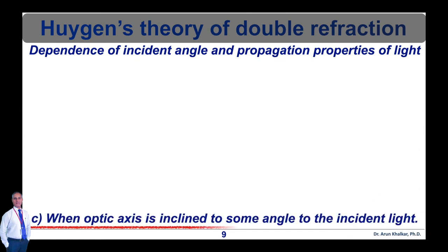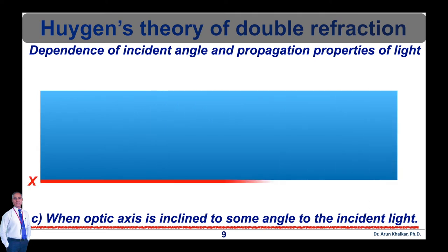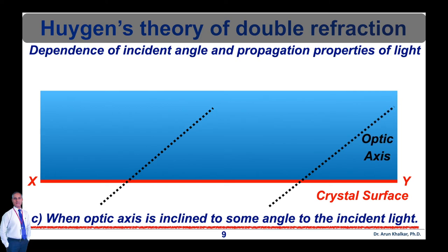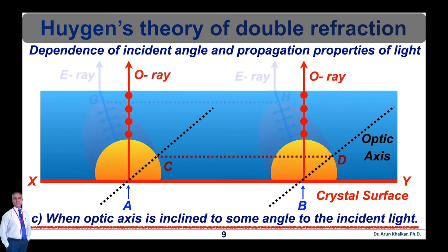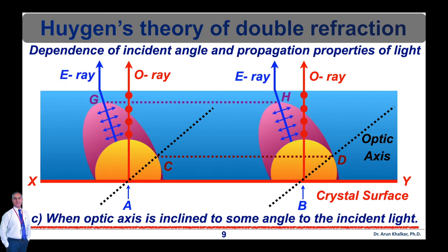In the third case, when the optic axis is inclined at some angle to the incident light — as shown in figure C — an unpolarized plane wave front is incident normally on the crystal surface so that the optic axis makes an angle with the crystal surface. The ordinary and extraordinary rays travel with different velocities in different directions in the crystal. Hence, double refraction is observed, and both rays are separated by an angle depending on the distance traveled in the crystal. The principle of double refraction is used in the construction of half wave plates and quarter wave plates. The birefringence of crystals can modify the polarization state of light, which is very useful in many applications. These optical components are called birefringent wave plates, retardation plates, or simply retarders.